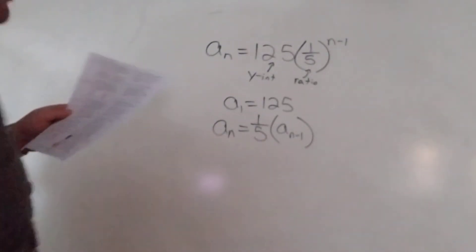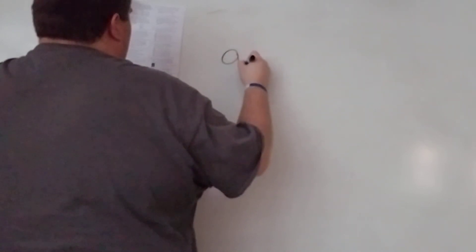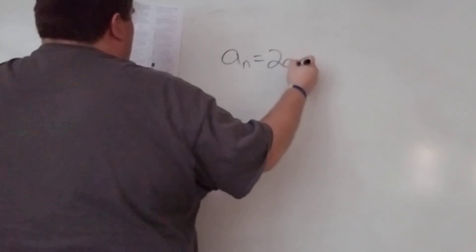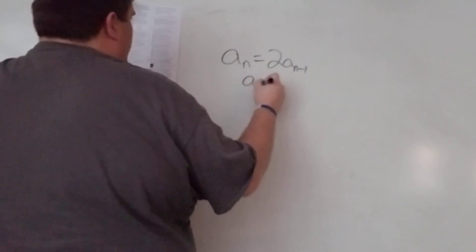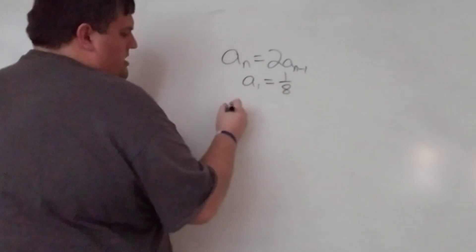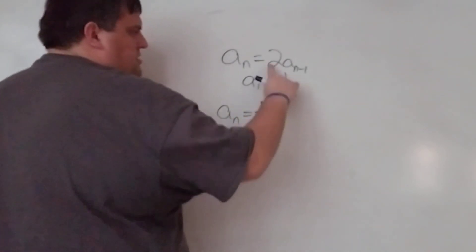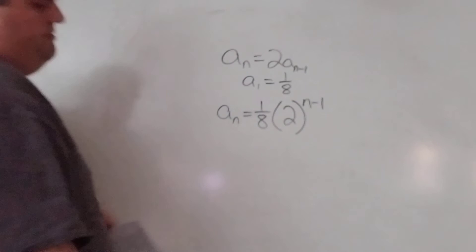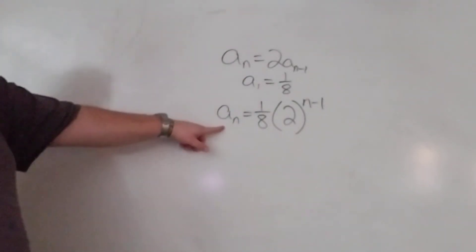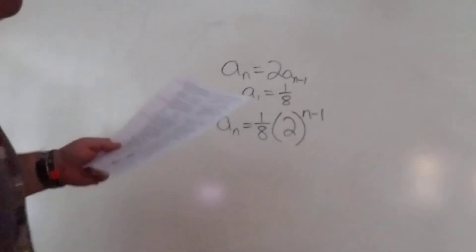Number seventeen is the flip: they gave the recursive formula, with a-sub-one equal to one-eighth, and we convert to explicit. The initial value one-eighth goes first, the ratio is two, so the explicit formula is a-sub-n equals one-eighth times two to the (n minus one).